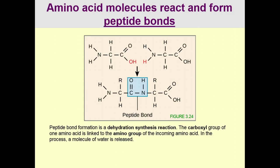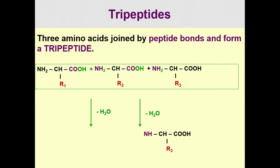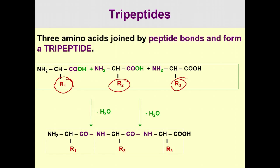Amino acid molecules join via a special bond called a peptide bond, which forms through dehydration synthesis — one water molecule is lost per bond. With three amino acids joined by two peptide bonds, we have a tripeptide. Forming the two bonds releases two molecules of water.